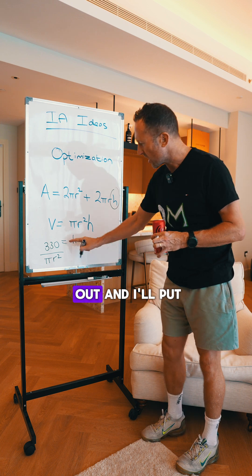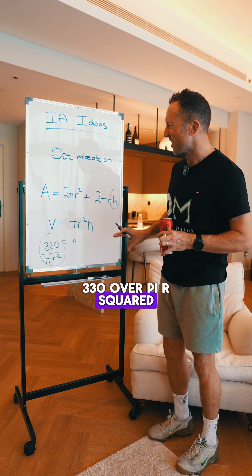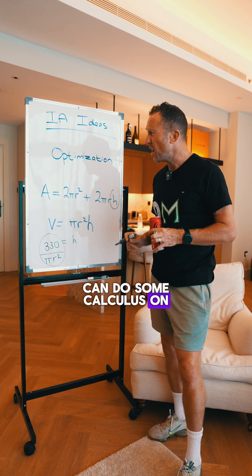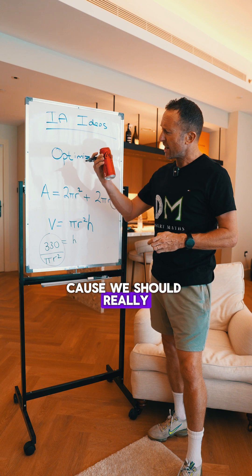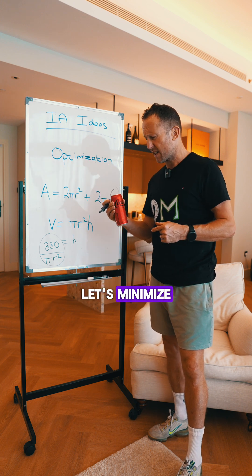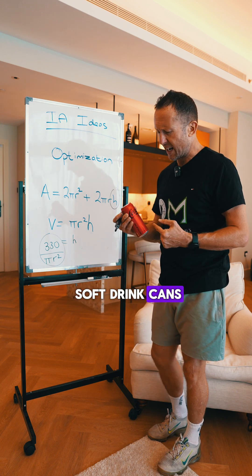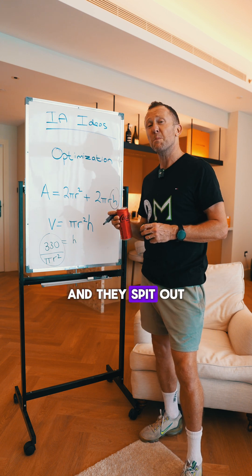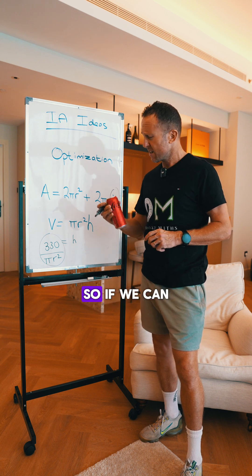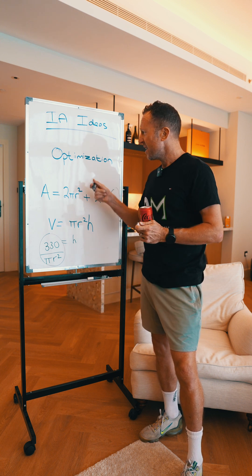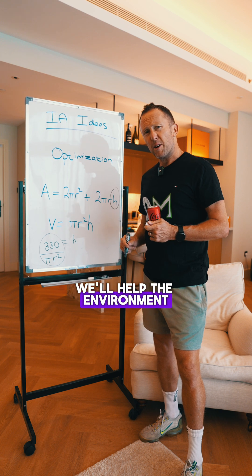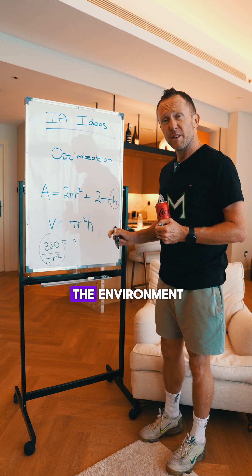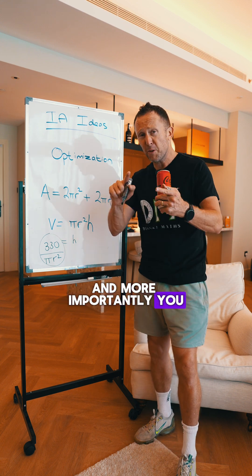I'll swap that h out and put in 330 / πr², and now we have a formula we can do some calculus on — some optimization — because we really want to minimize the amount of aluminium that goes into our soft drink cans. Aluminium smelters are pretty dirty and spit out a lot of toxic gases, so if we can reduce the amount of aluminium used globally, we'll help the environment. We may not have a beautiful can — cans do tend to get a bit ugly when we optimize — but we could save the environment, and more importantly, you can have a great IA.